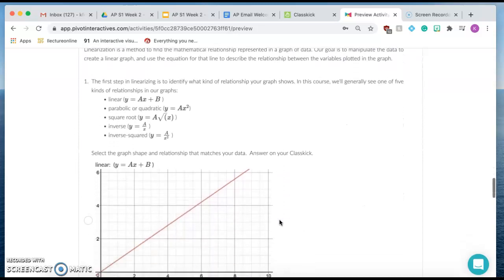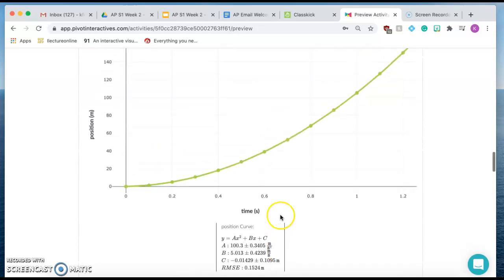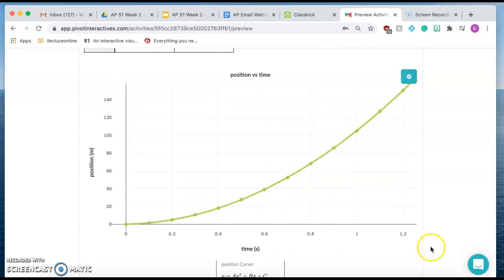So now, when you go to linearize a graph, what you want to do is I want to take this data and make it so that it reads as a straight line, okay? But obviously, position and time are not linearly related, so I can't just graph position versus time. I have to change something, okay?